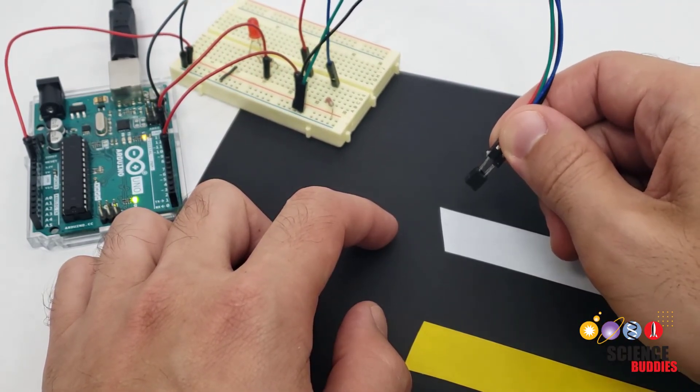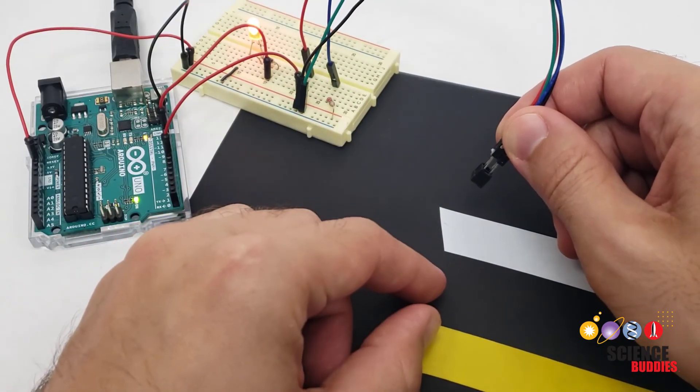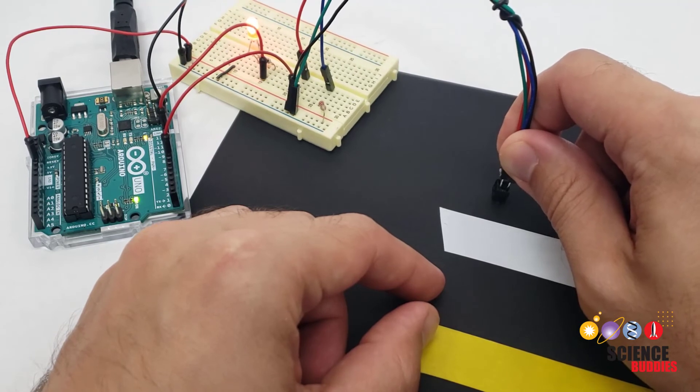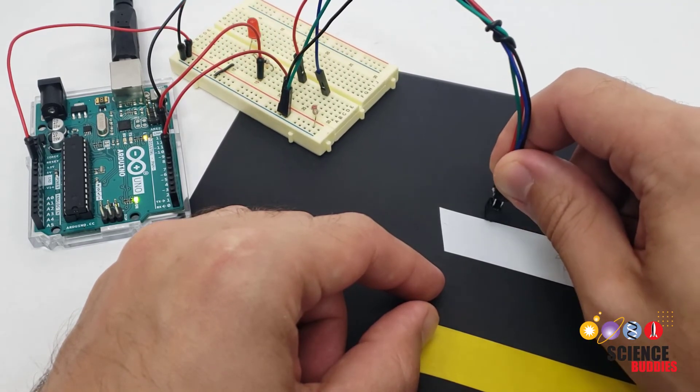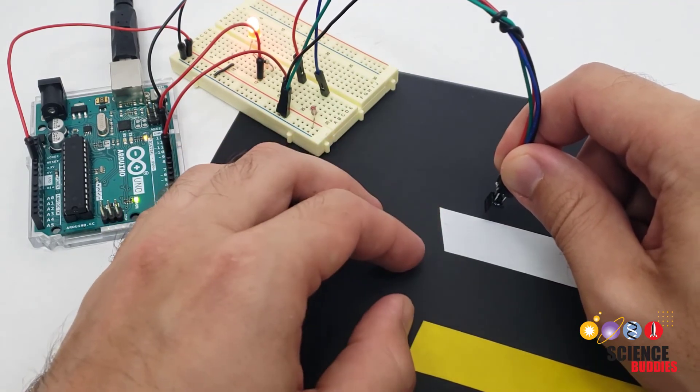So for example if you're going to mount these sensors on a robot or autonomous car you need to make very sure that they stay a constant distance from the surface or else you might not be able to properly tell the difference between the surface and the lines you're trying to detect.